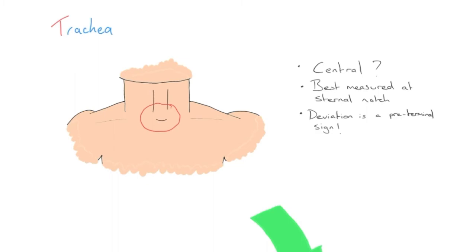Deviation is most evident at the sternal notch — just where the trachea enters the sternum — as that's closest to the mediastinum where this movement originates. We're simply checking: is it central or is it moving left or right? If we found diminished breath sounds and hyper-resonance on one side during our FLAPS assessment, and the trachea is moving to the right, that further reinforces the clinical picture that something is going on in the left chest that we'll probably need to act on.